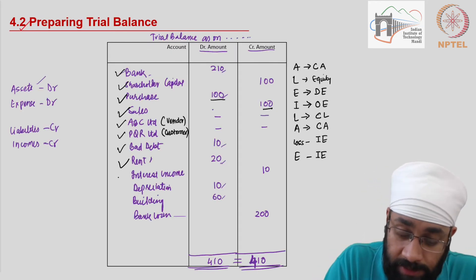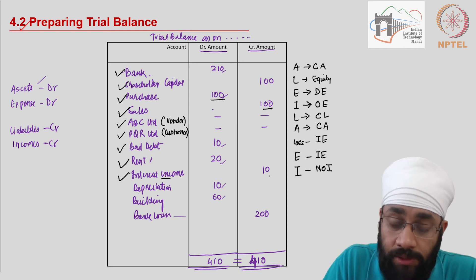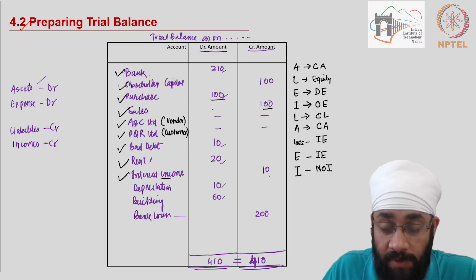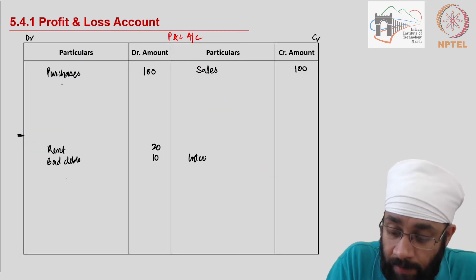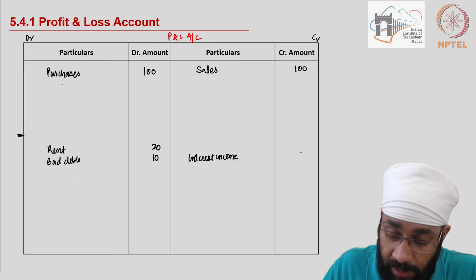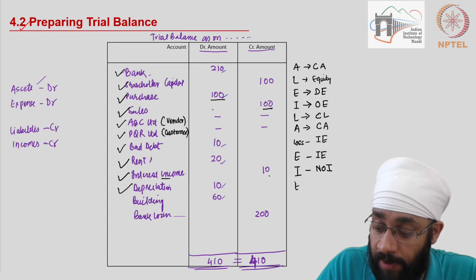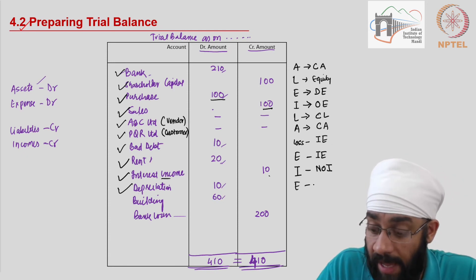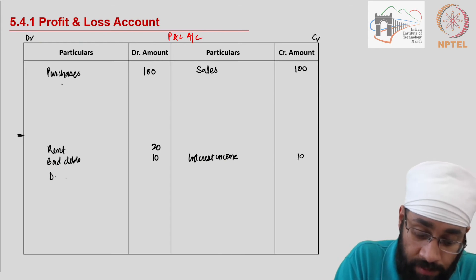Next is interest income of 10. This goes into incomes and is also a non-operating income - any income other than sales is non-operating income unless you are in that business as well. Interest income of 10 is written in the second half of the profit and loss account on the credit side. Then depreciation of 10 is regarded as an indirect expense and will be shown under indirect expenses.